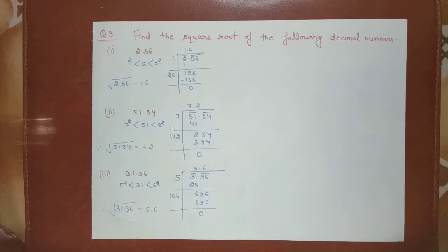So in this way we can find out the square root, which we have 3 methods: repeated subtraction, prime factorization, and division method.